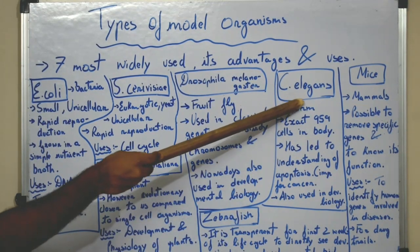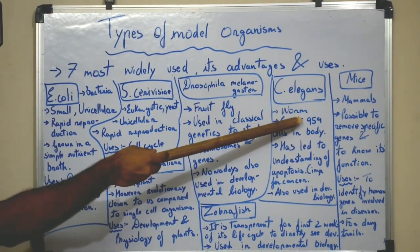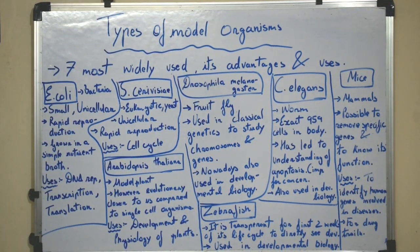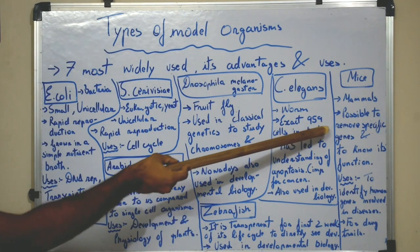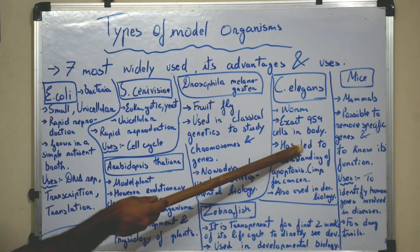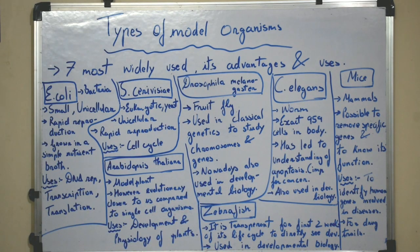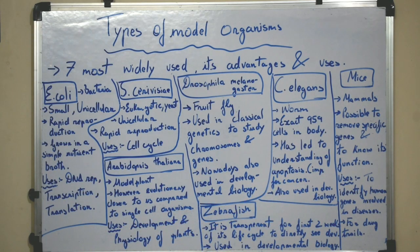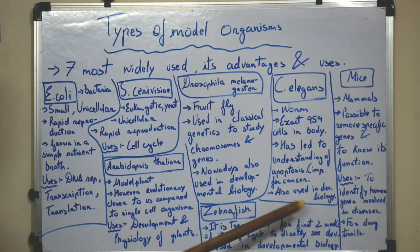Then we move on to C. elegans. C. elegans, or Caenorhabditis elegans, is a worm which has exactly 959 cells in the body. So it is very useful to study developmental biology because it has exactly 959 cells. It has also led to understanding of apoptosis, which is very important for cancer research, and it is also used in developmental biology.